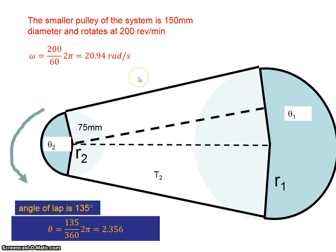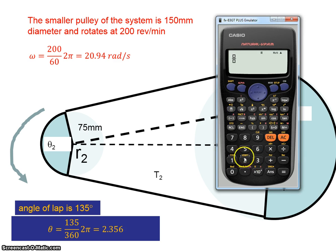The smaller pulley is 150mm diameter, which means a radius of 75mm, and it rotates at 200 revs per minute. To convert revs per minute to radians per second, I divide by 60 and multiply by 2π. So I have 200 over 60, multiply that by 2π, and that gives me 20.94 radians per second.